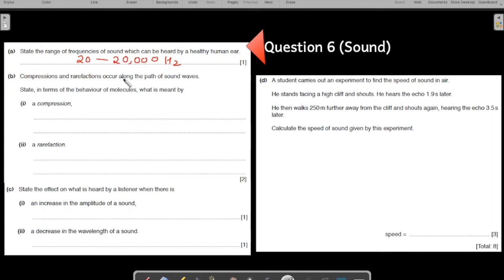Now part B. Compressions and rarefaction occur along the path of the sound wave. State in terms of the behavior of molecules what is meant by compressions and rarefaction. As we have solved so many questions already, five questions already, you would have understood a pattern. These questions to define compressions and rarefaction are very common. You need to learn how to write the answer for these. We have already practiced this time and again in the previous set of questions.